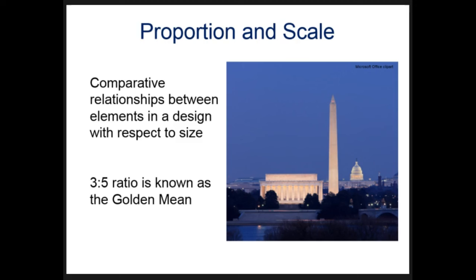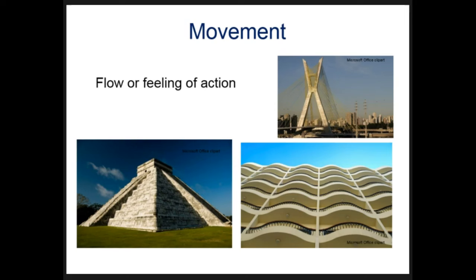Our next principle is proportion and scale. Like in mathematics, proportion compares the size of things — anything in a three-to-five ratio is the golden mean or golden ratio. Here we can see the ratio of how big this building is compared to the Washington Monument. Movement is our next principle, which has to do with the feeling or flow of action in a design.